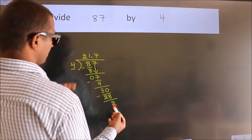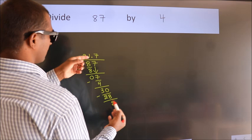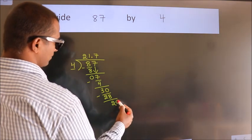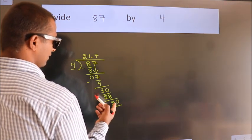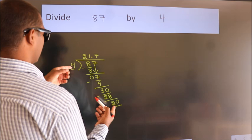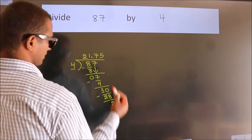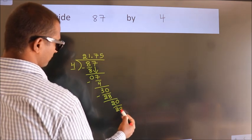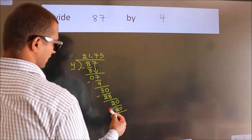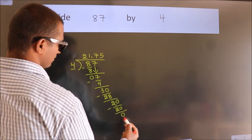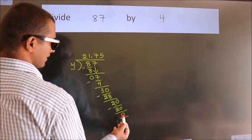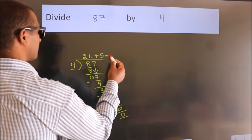After this, we already have the decimal. So directly take 0. So 20. When do we get 20 in the 4 table? 4 5's are 20. Now we subtract. We get 0. We got remainder 0. So this is our quotient.